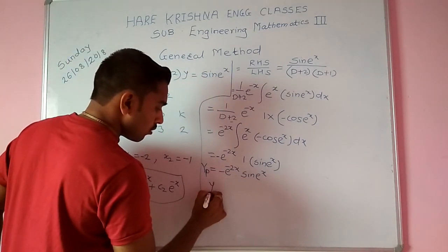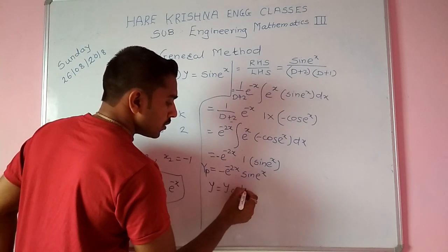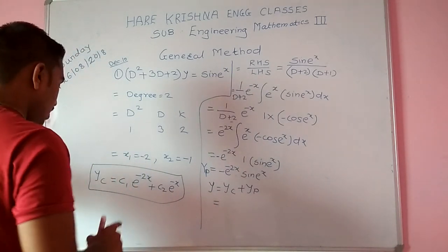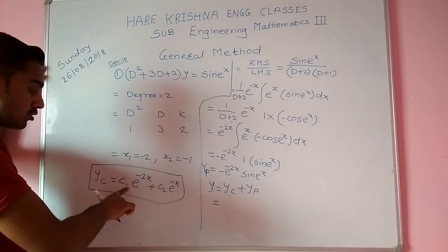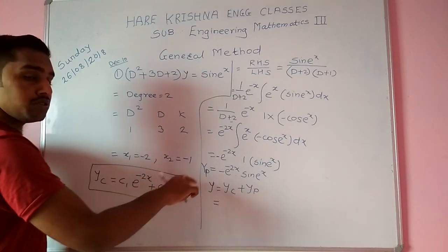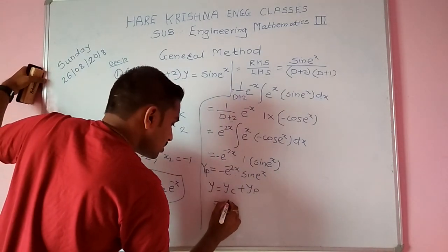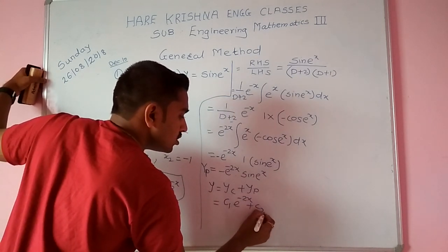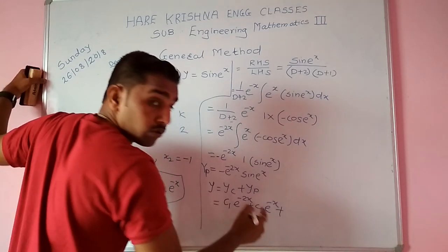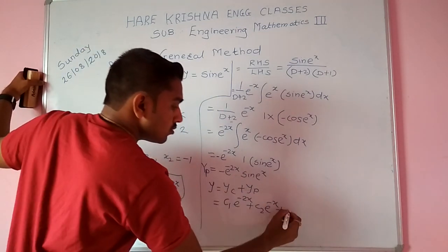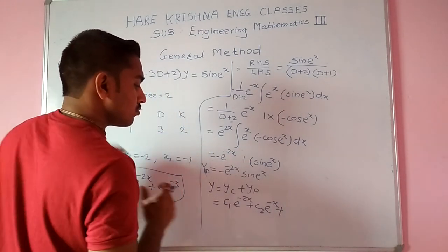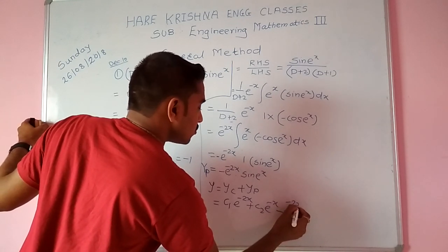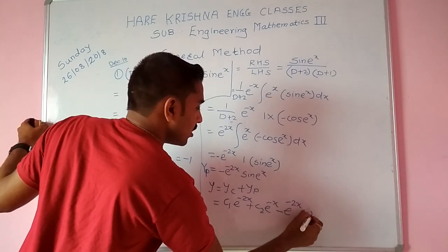Now y equals yc plus yp. So yc = c₁e^(−2x) + c₂e^(−x), and yp = −e^(−2x)·sin(eˣ). This is our final answer.